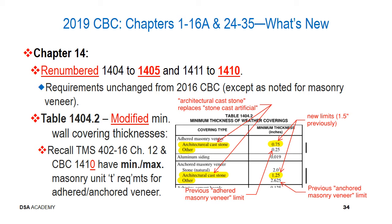For anchored masonry veneer, the minimum thickness remains at 2 and 5/8 inches but is now referenced as 'other' within anchored masonry veneer. Recall that TMS 402 chapters 12 and CBC section 1410 have minimum and maximum masonry unit thickness requirements for adhered and anchored veneer which may govern over table minimums. In chapter 14, section 1404.18 for polypropylene siding, the type 5B exterior wall construction limitation has been removed, so you may now see polypropylene siding on type 5B construction.